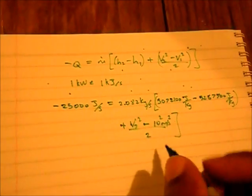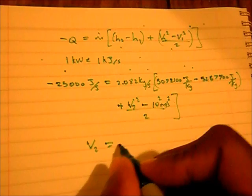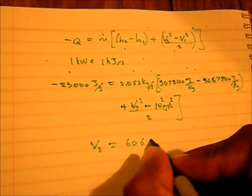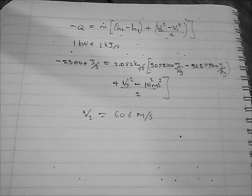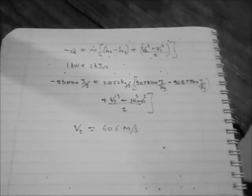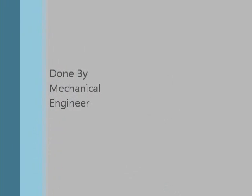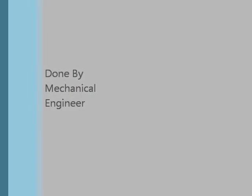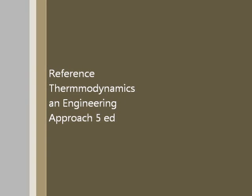And by calculating this and by transposing, we found that V2 is equal to 606 meters per second. So we found that V2, the velocity at the exit of the nozzle, is equal to 606 meters per second, and that is the question. I'm going to thank you.